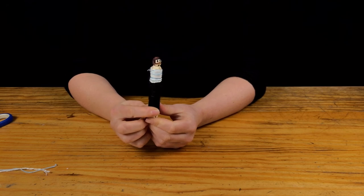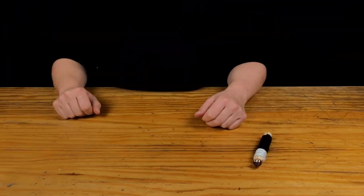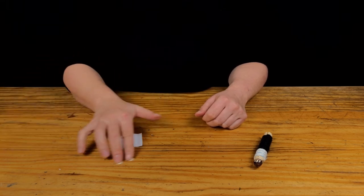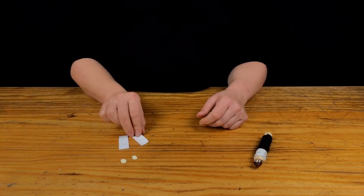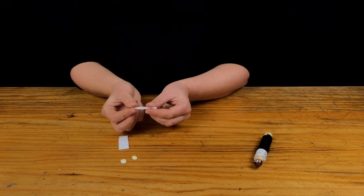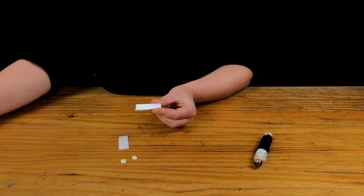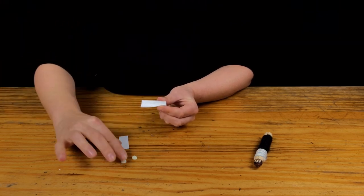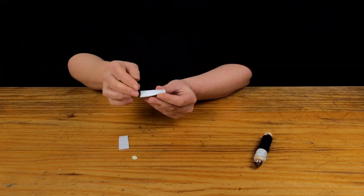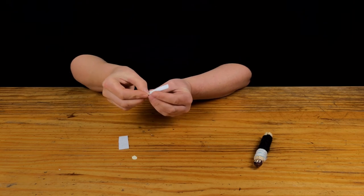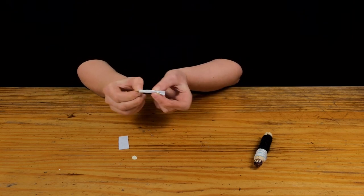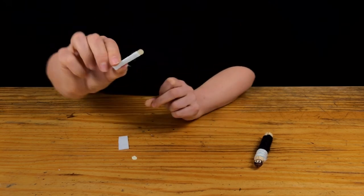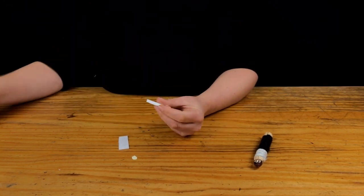Now to give him some arms. Cut out two rectangles of felt and two small ovals of card to make hands. Fold the rectangle in half lengthways. Add some glue, then place the hand at one end and sandwich the arm together. Now glue the arms to the puppet.